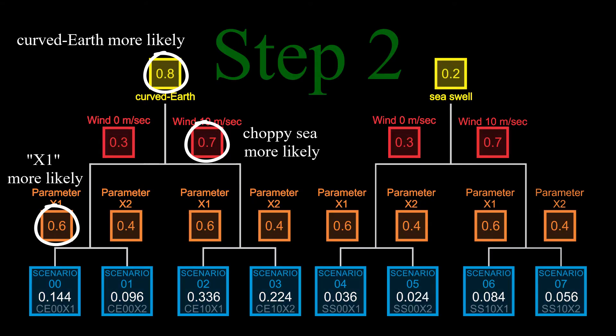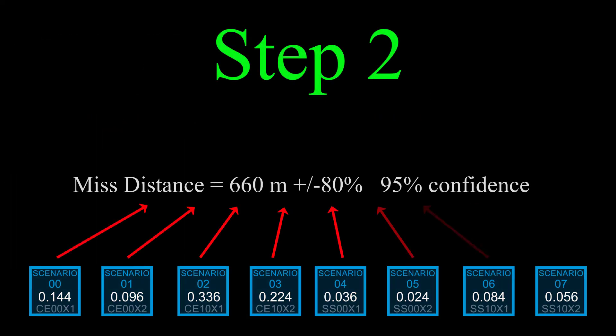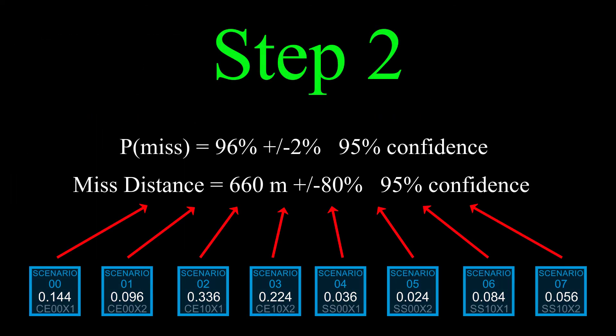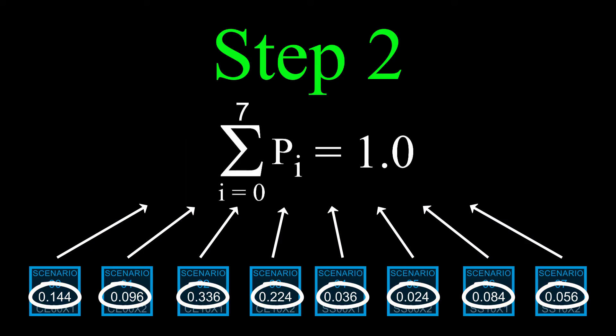Ultimately, we're going to calculate the probability of drone miss and drone miss distance statistics for an ensemble of all eight populations, which means runs in each population have to be weighted by the likelihood that the conditions for that population will occur. They might not all be equally likely. And pretty obviously, the sum of all those probabilities of occurrences has to add up to 1.0.